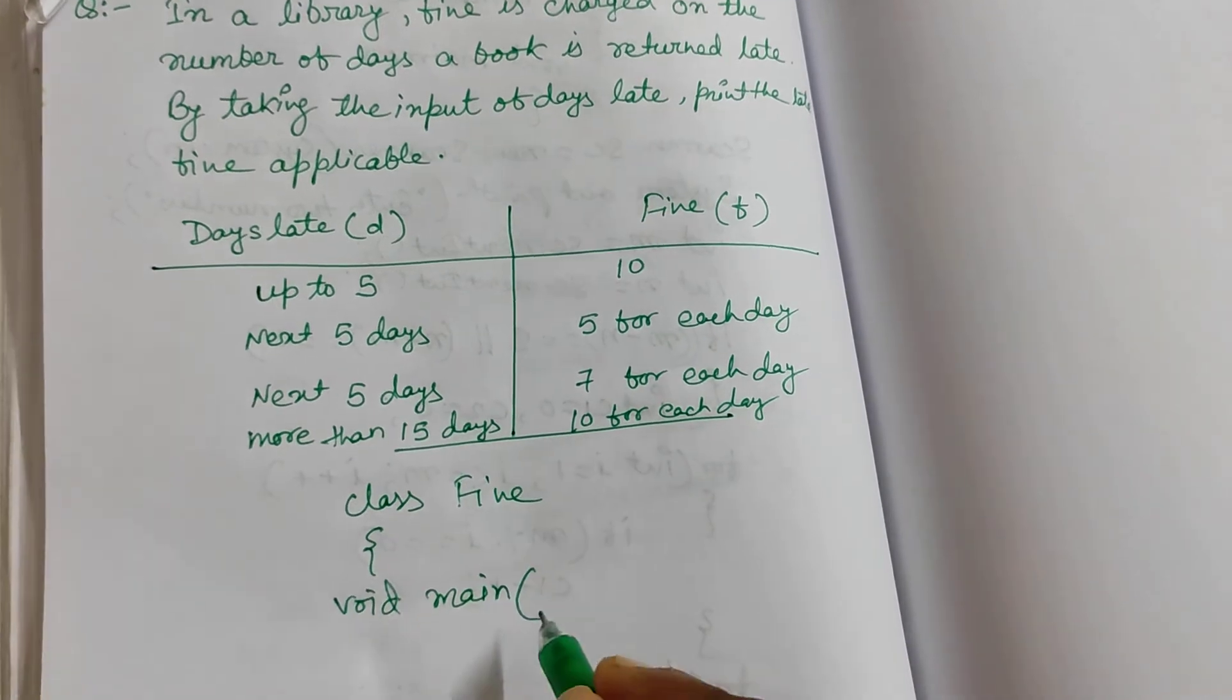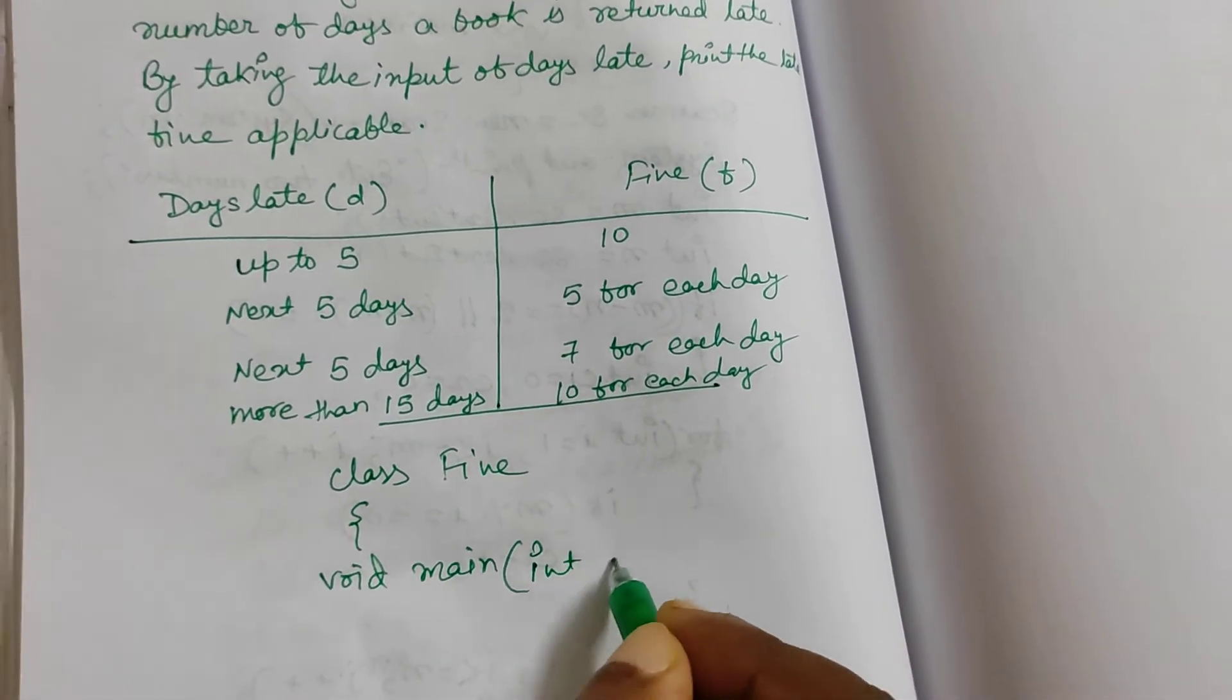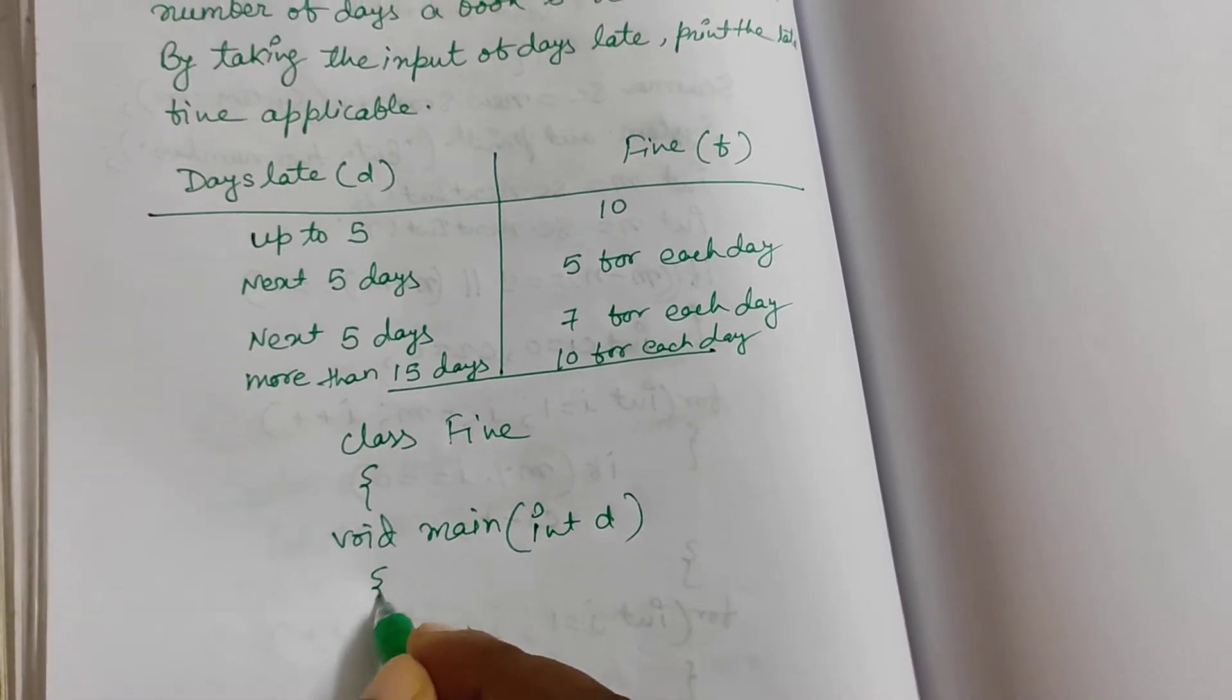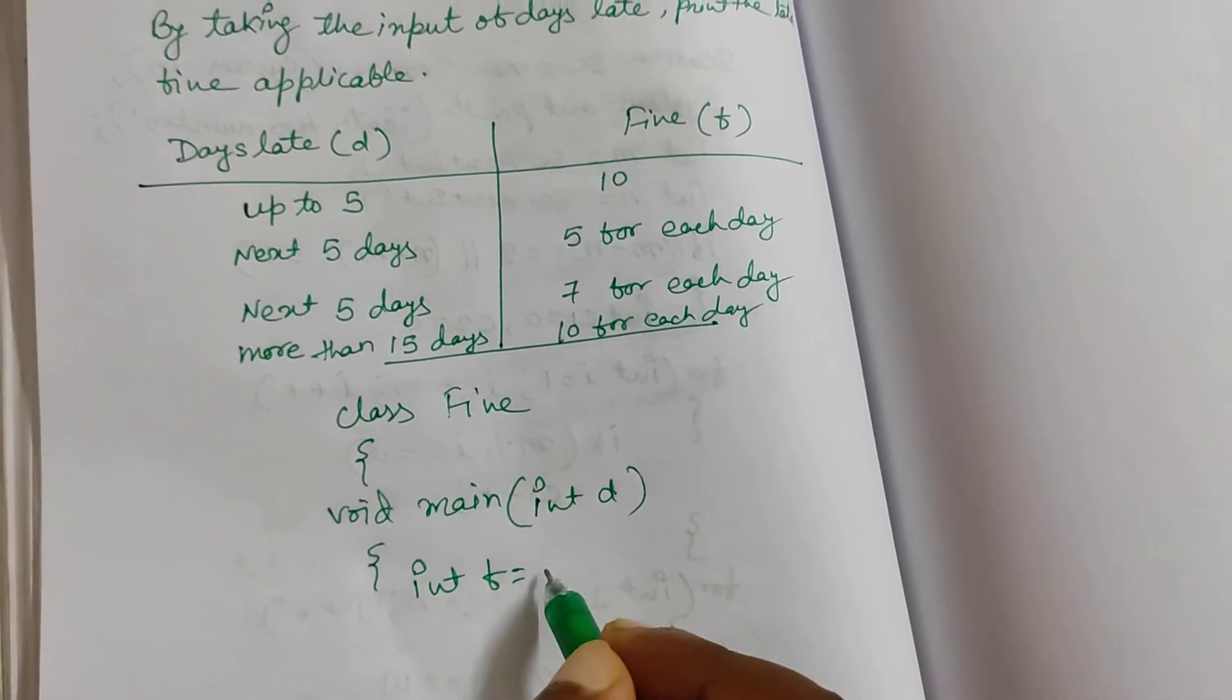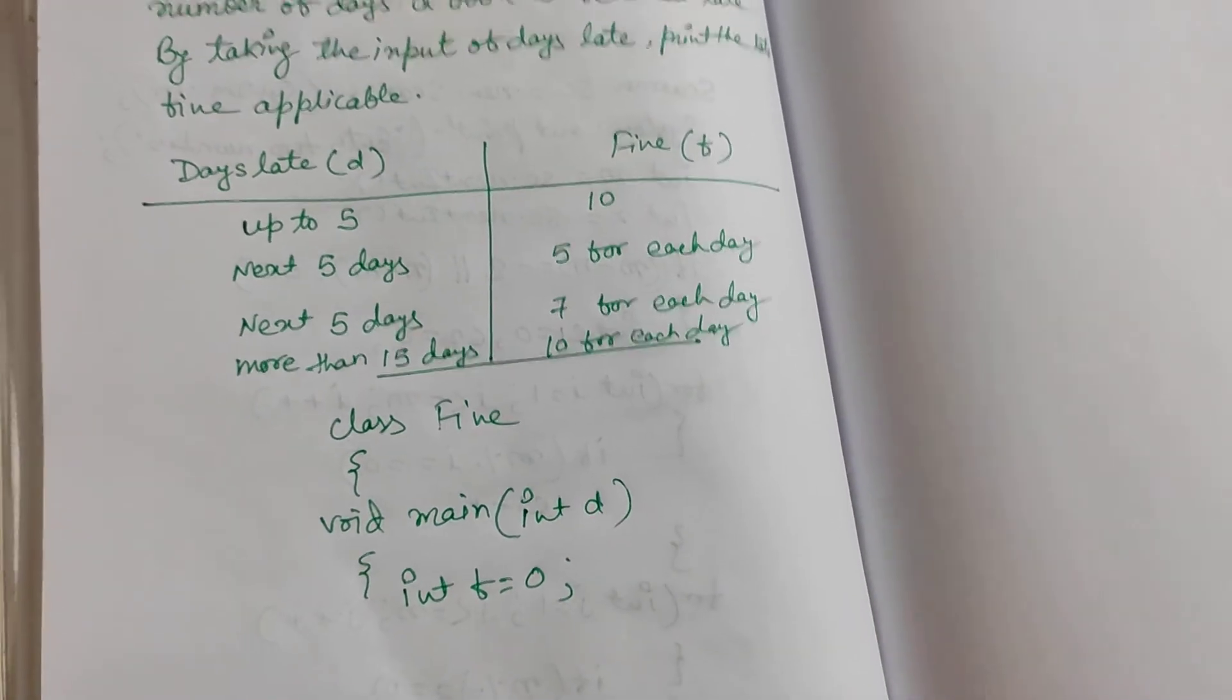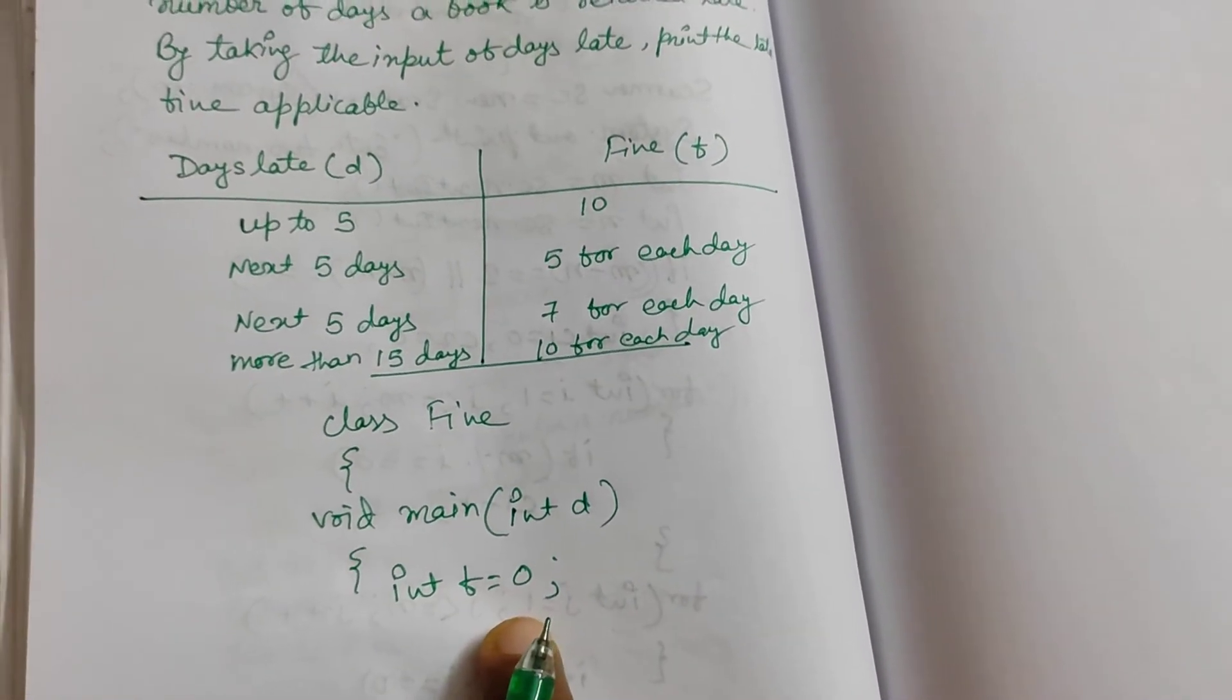we will take the values, what number of days late. So it is int d, so we have to find out f, so int f equals to 0. We don't know how much, so first initial value we will give 0.